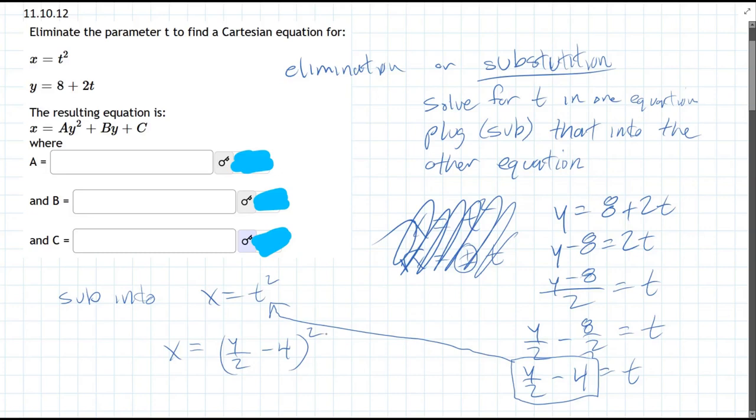At this step, we have a Cartesian equation, because we have one equation without any t's, only x's and y's. However, it's not in the form that they're asking for.